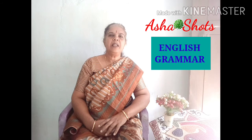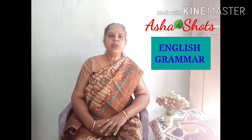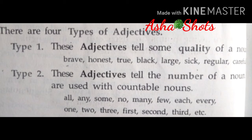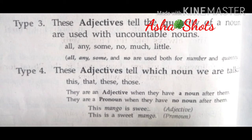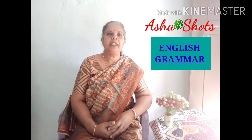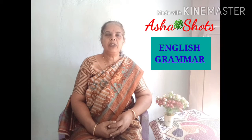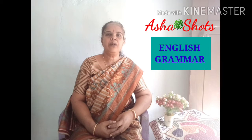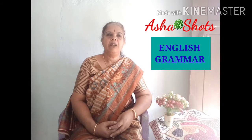Now we talk about 'no' and 'not any.' No is equal to not any. No is an adjective, and any is also an adjective. We can use 'not any' in place of 'no.' No or any can be used with all types of nouns — that is, countable, uncountable, singular, plural. Different examples are there.